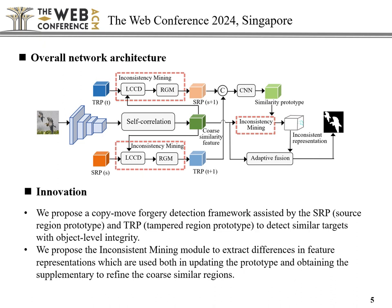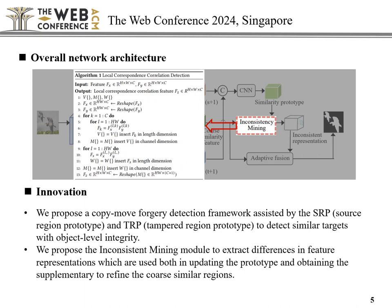To further refine the targets, we optimize the co-similarity region features with a pair of prototypes as auxiliary information. We use inconsistency mining to obtain a representation of the inconsistency between the two and identify doubtful pixels that are difficult to classify as targets or backgrounds. The refined detection results are obtained through the adaptive fusion of these doubtful pixels and co-similarity features.